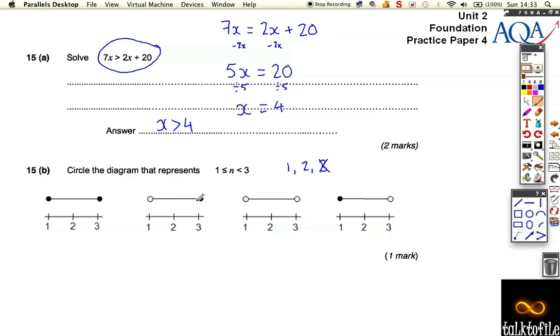But we need to do this on a diagram. So all these diagrams go from one to three. The only difference is some of them have these little filled-in blobs, and some of them have empty blobs.